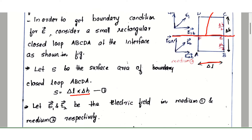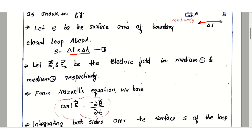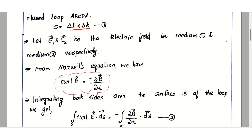Let E1 and E2 be the electric fields in medium 1 and medium 2 respectively. Now, the Maxwell equation is: curl E equals minus ∂B/∂t. This is the Maxwell equation. We apply: curl E equals minus ∂B/∂t, and then integrate both sides over the surface of the loop.